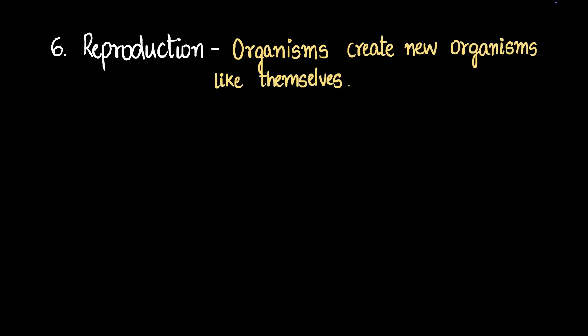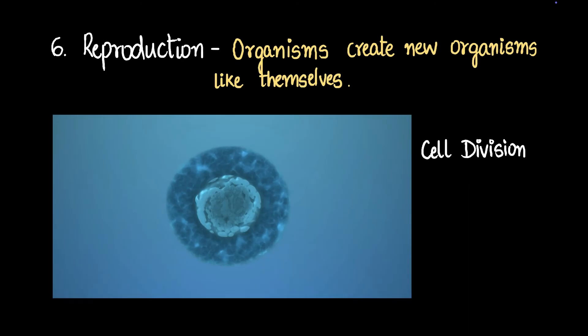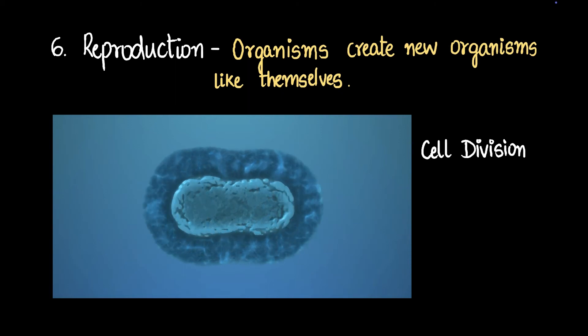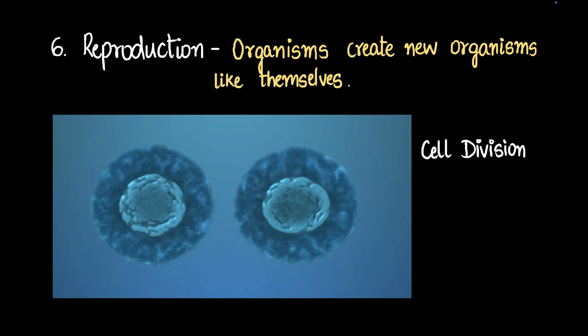Number six, reproduction. Reproduction is basically when organisms create new organisms like themselves. That's called reproduction. Let me give you an example. Cell division. This is the simplest way by which an organism can perform reproduction. This is seen usually in really small organisms which are single-celled organisms or unicellular organisms, like this one here. This cell will just expand a little and slowly split into two. Done.